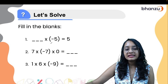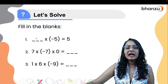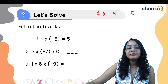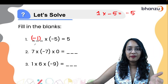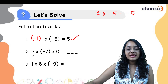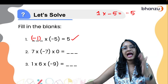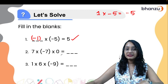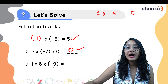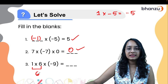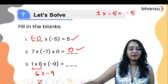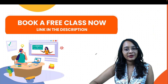Let us solve a few questions. What will you multiply minus 5 by to get plus 5? It cannot be 1, because 1 times minus 5 is minus 5. The answer is minus 1: minus 5 multiplied by minus 1 gives plus 5. Next: 7 multiplied by minus 7 gives a negative number, but that is then multiplied by zero, so the overall answer is zero — neither positive nor negative. Finally, 1 multiplied by 6 gives 6 (both positive), then 6 multiplied by minus 9 gives minus 54.